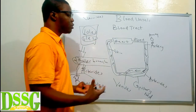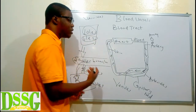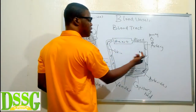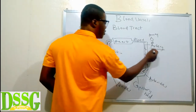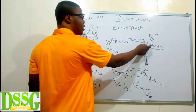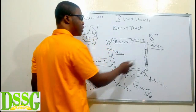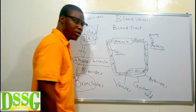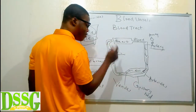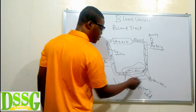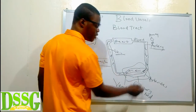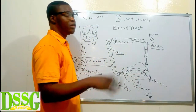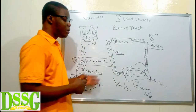From the blood tract, what can we deduce? We see that we have two main blood vessels: the artery and the vein. The artery carries blood away from the heart, while veins return the blood back to the heart. We also have another blood vessel — the capillary bed.